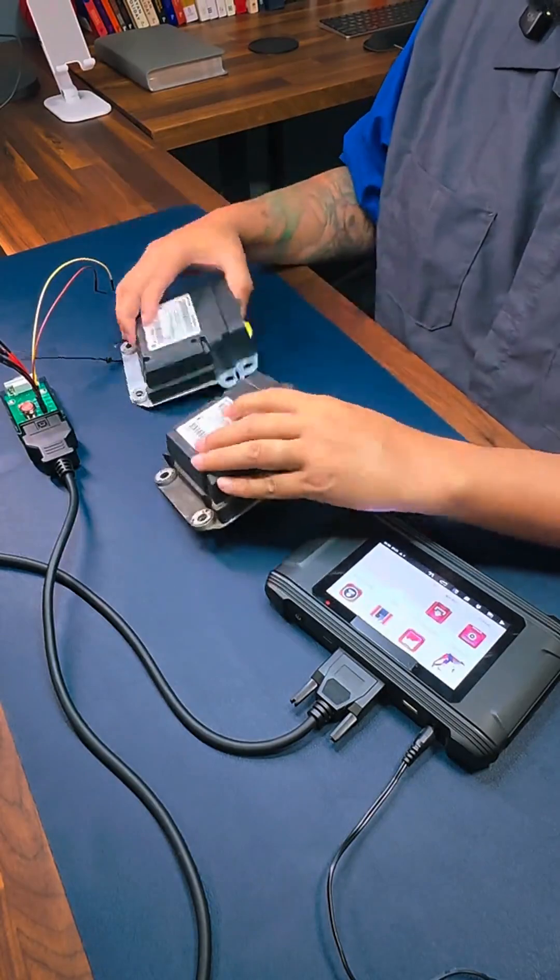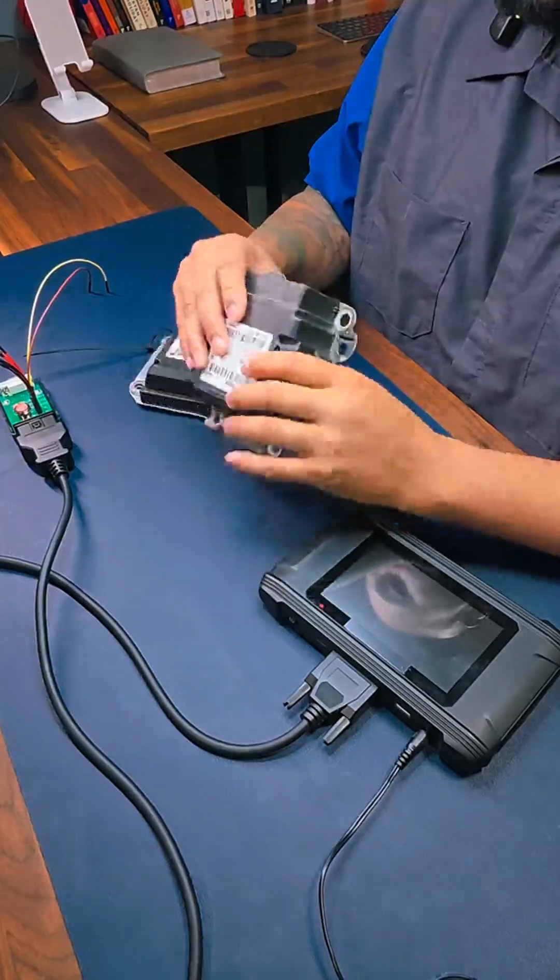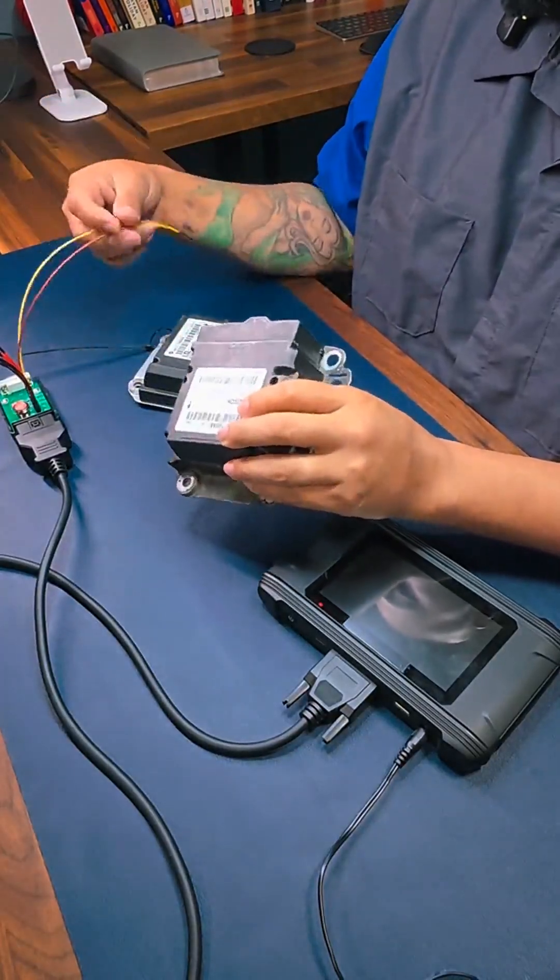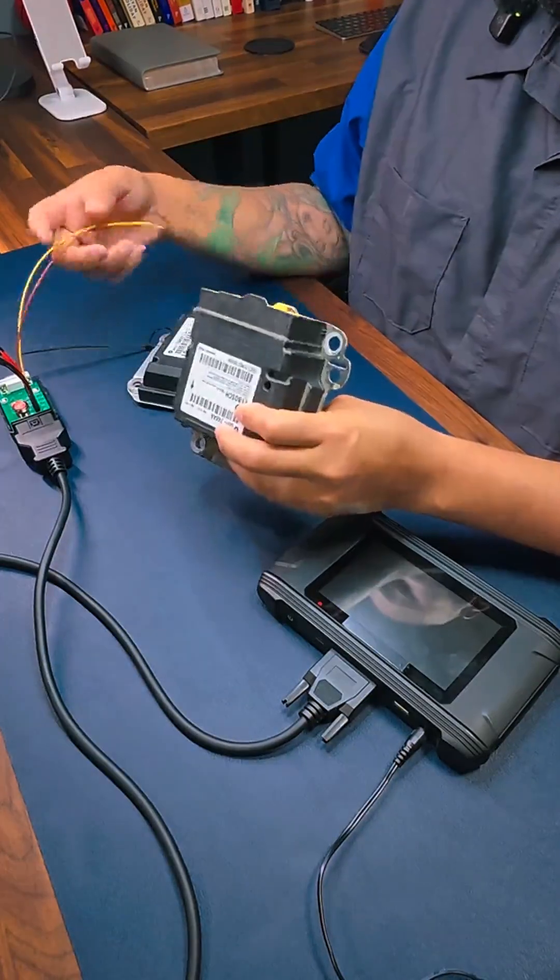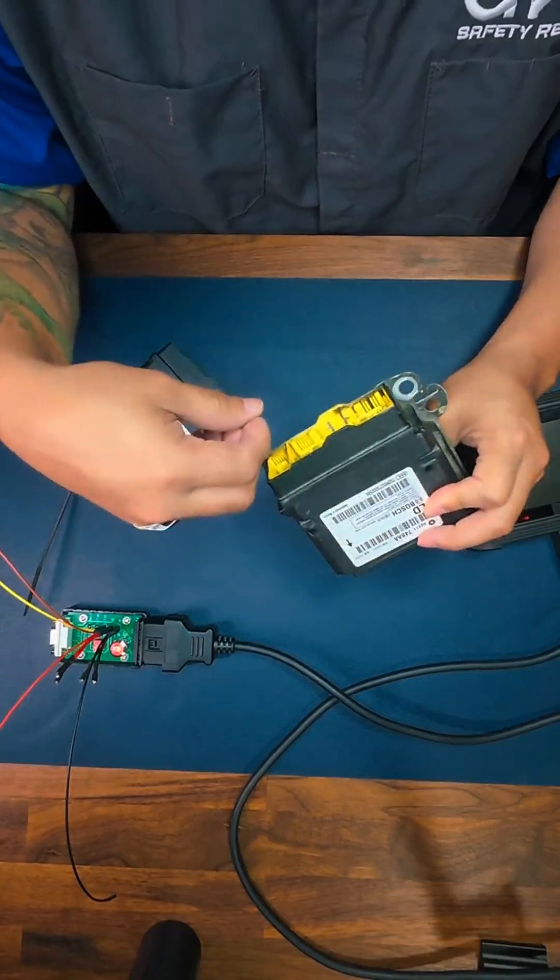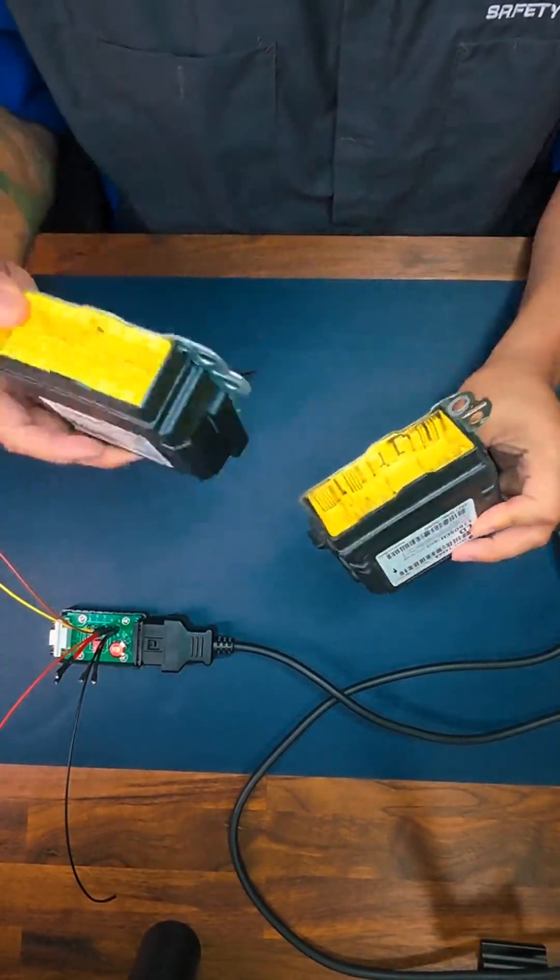So what we're going to do, we got one from the junkyard, and the method that we're going to be using today is a pinout. We're going to pin out these cables to the specific pin points on the module. We're going to download all the data of the old module and transfer all that data into the new module right here.